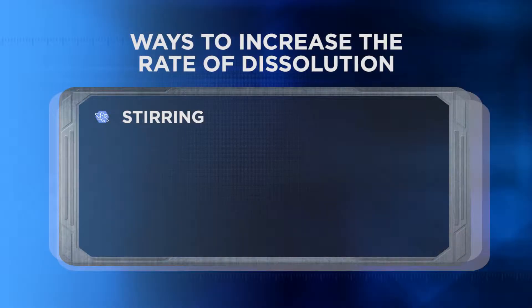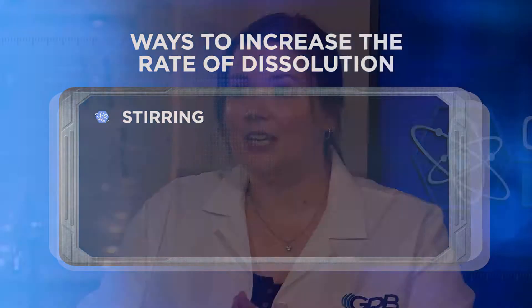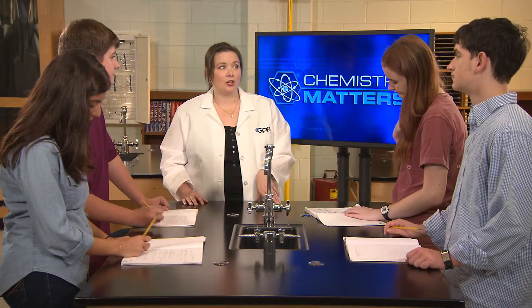To get the milk to dissolve more chocolate powder, you could stir it. In order for something to dissolve, the solute and solvent must come into contact. Stirring increases fresh solvent contact with the solute particles, which increases the rate at which a solute dissolves in a solvent — also called the rate of dissolution.